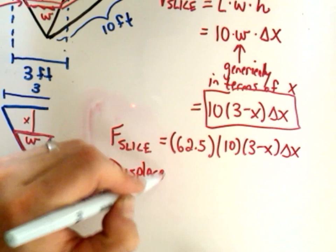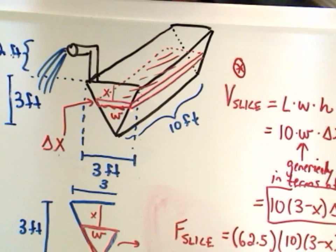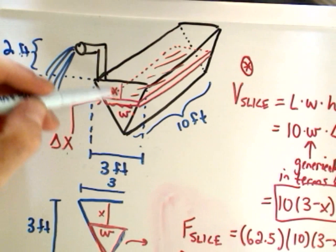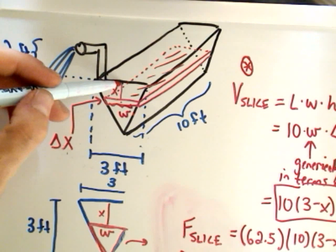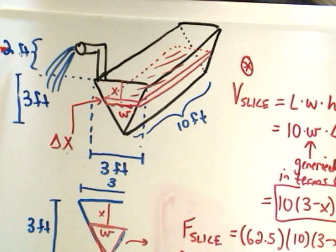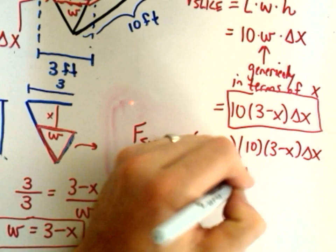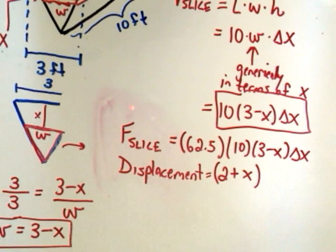Let's think about the displacement that this little slice of water would have to go through to get up and out. Okay, so let's look at our picture again. We have to remember there's a two-foot spout here on the top of this tank. The depth down was x units. So to get this slice of water just to the top of the tank, it would have to travel a distance of x units. But then to get up and out, it would have to go another two units. So the displacement this slab of water will have to go through will be 2 plus x. If there were no spout, it would just be x units. If the spout was 50 feet tall, the displacement would be 50 plus x.